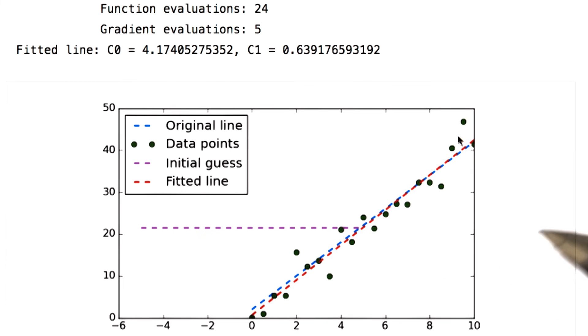And then it iterates and tries different slopes and different y-intercepts. Until finally it converges to this red line, and that's the solution. And I think it looks pretty decent.